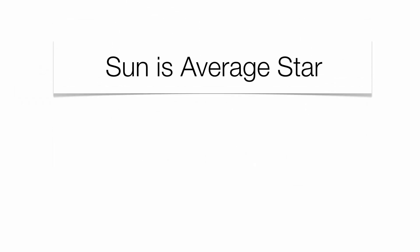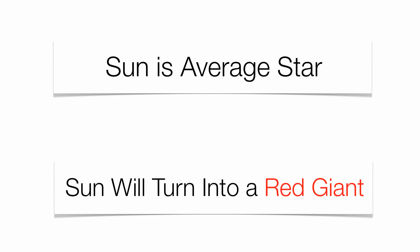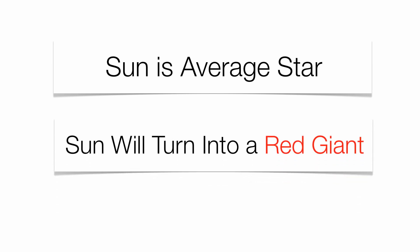Now, our sun is considered an average star. It falls right in the middle of all stars that have been documented. It's got an average size, an average mass, an average brightness. And eventually, our sun will turn into what's called a red giant. Now, that's not going to happen for another five billion years. The sun has enough energy to last for another five billion years.